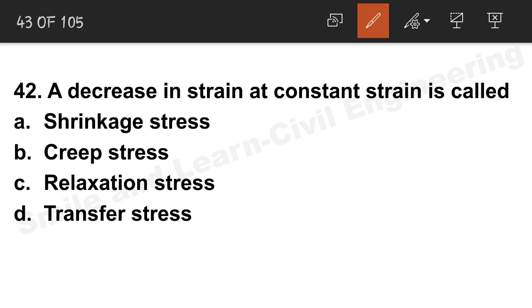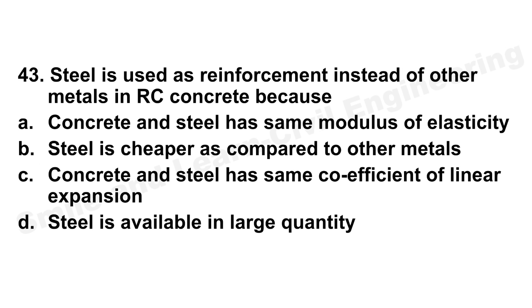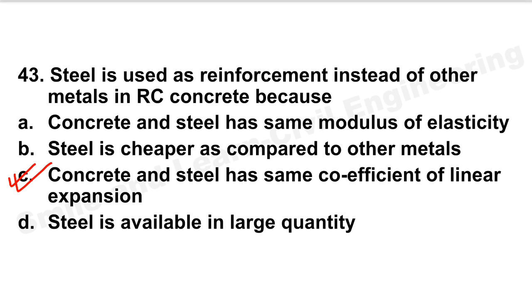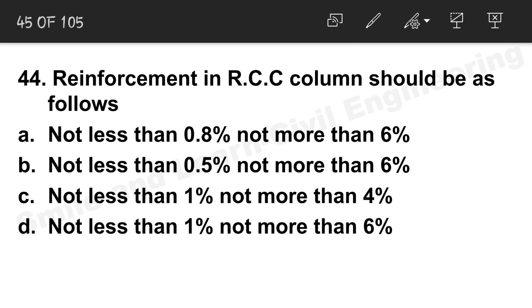Question 43: Steel is used as reinforcement in reinforced concrete instead of other metals because concrete and steel have the same coefficient of linear expansion, meaning they expand and contract equally. Option C is correct. Otherwise, differential expansion would cause cracking, and this compatibility allows both materials to work together effectively in compression and tension.